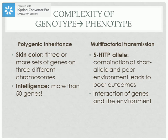Two of your vocabulary words discuss directly the complexity of nature and nurture — specifically how we can figure out when specific genotypes lead to specific phenotypes. The first term, polygenic inheritance, relates to how there are many genes that can lead to one trait. Multifactorial transmission acknowledges that there are both genetic and environmental factors contributing to an outcome, like the 5-HTT allele that you'll read about in both the endophenotype and probabilistic epigenesis articles.